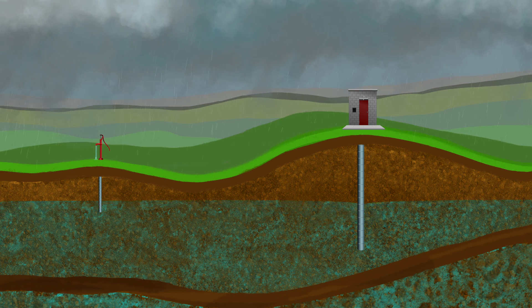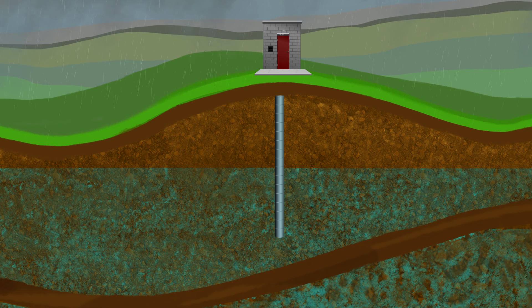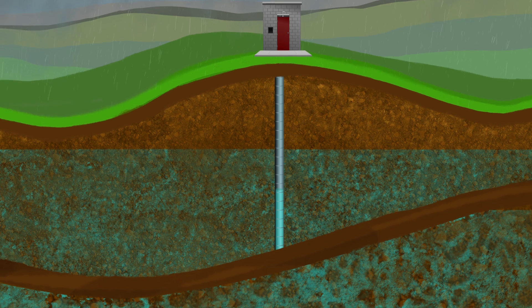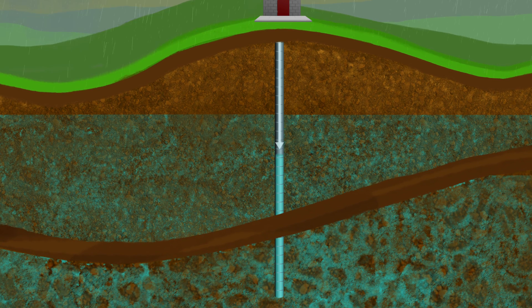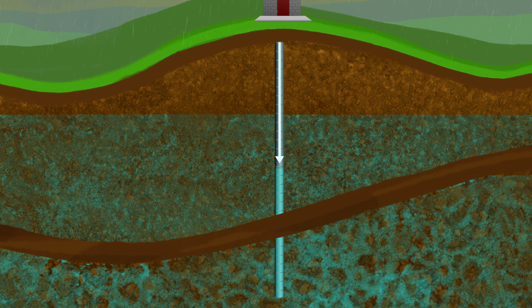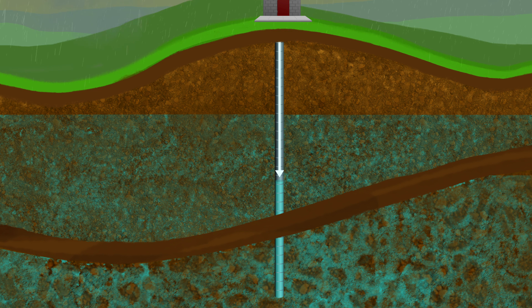When we think of a cone of depression, we usually see these happening in unconfined aquifers. But we can also have drawdown in confined aquifers, where we would see just a lowering of the hydraulic head versus a cone shape of the water.